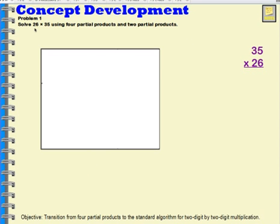Let's solve 26 times 35 using partial products. I'm going to begin by looking at 35 times 26 and thinking about them on an area model. I'm going to first start with 35 and think about how 35 can be broken up into 30 and 5.